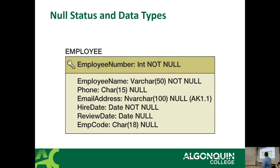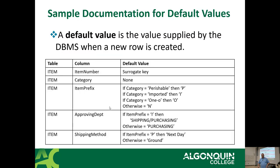Once you've done your table definition with data types, null/not null, and identifying keys — that's essentially a physical design. The only difference between a logical design and a physical design is that the logical design has no data types. When someone says 'I have a logical diagram,' it's literally the same thing without data types. Add data types and now you have a physical design.